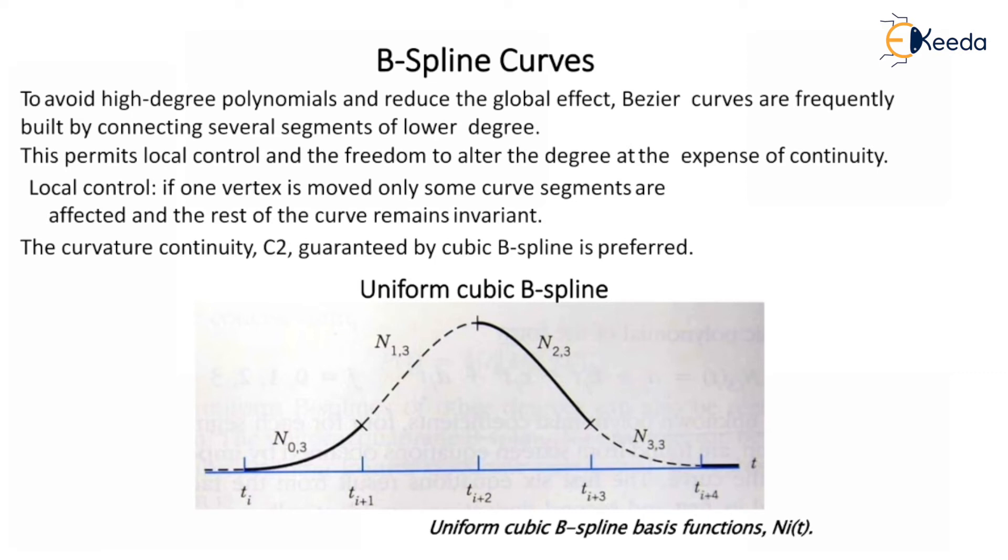Local control: if one vertex is moved, only some curvature segments are affected and the rest of the curve remain invariant. That means rest of the curve will not be changed.